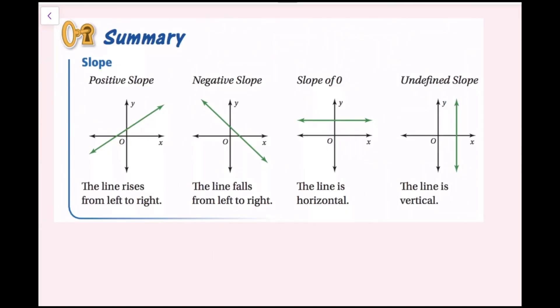Here is a graphic of all the different kinds of slopes of lines you can have. For positive slope, the line is increasing from left to right. For negative slope, the line is decreasing from left to right. A slope of zero is a horizontal line, and an undefined slope is a vertical line.